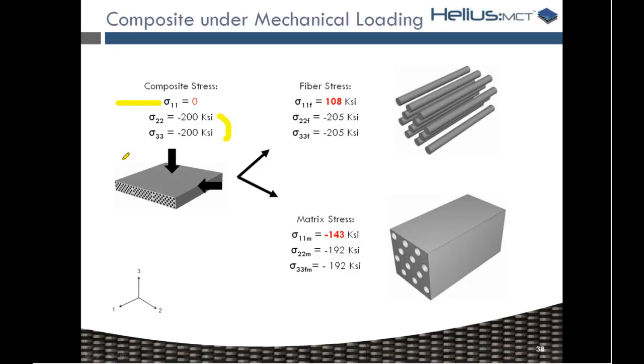If you were to solve that in an FEA package and look at the results, sure enough, you would show that you would have stress of 200 KSI compression in the two and three direction, but in the one direction, of course, you would see zero stress. But in real life, we're getting something quite different, and if we look at the MCT constituent breakdown that you see on the right-hand side,